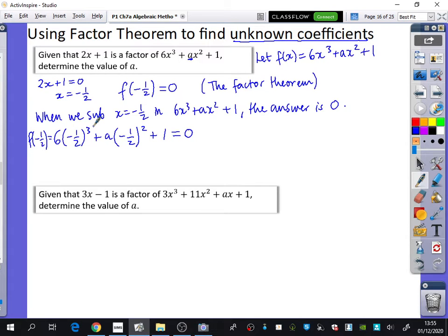What's minus 1/2 cubed? Minus 1/8. And minus 1/8 times 6 is minus 6/8, which is minus 3/4. What's minus 1/2 squared? A quarter. It's a negative times a negative. So you get plus a/4 + 1 = 0.